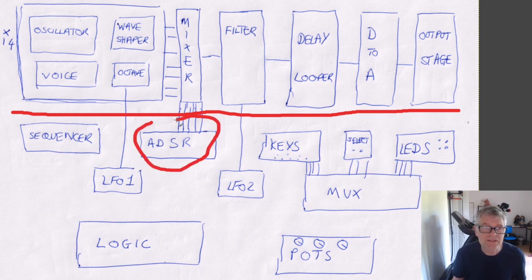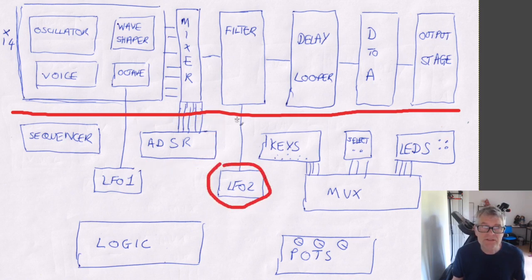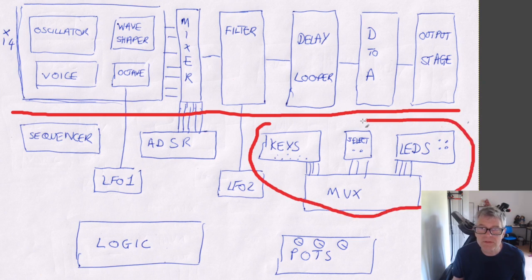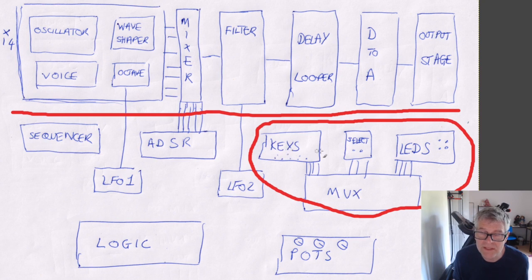We've talked about the ADSR, the attack, decay, sustain, release. It makes the keys actually work. There's another LFO which connects to the filter. It doesn't really do much more than add a tremolo effect, kind of a twiddling of the volume. This section here, all of this, is really much more concerned about dealing with the hardware. How do I deal with 14 keys, two select buttons, four LEDs, when I only have a limited number of actual connections into the Raspberry Pi.